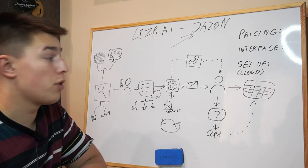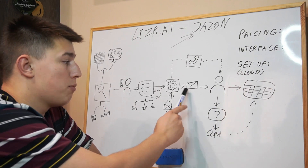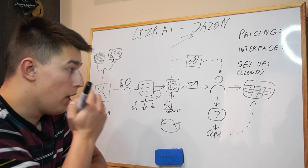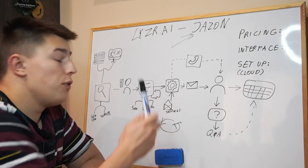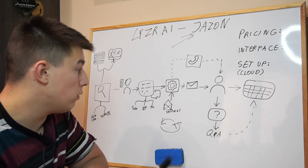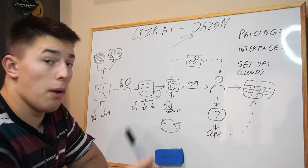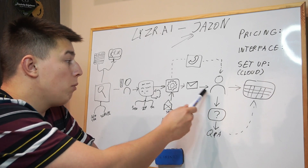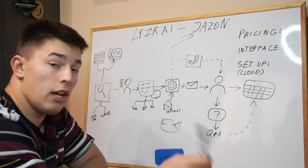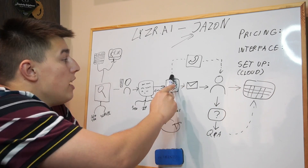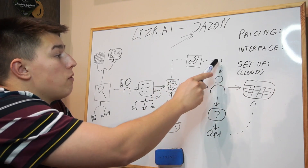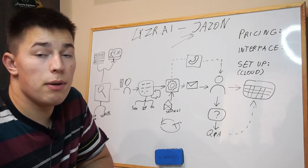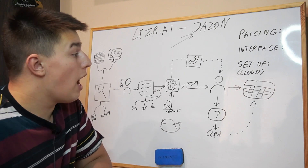If your prospects do not respond to any of the emails you send — whether you set up five follow-ups or even twenty follow-ups, which you shouldn't do — if they don't respond to any of those follow-ups, Jason will then call them and send them a voice message to check in with the lead.